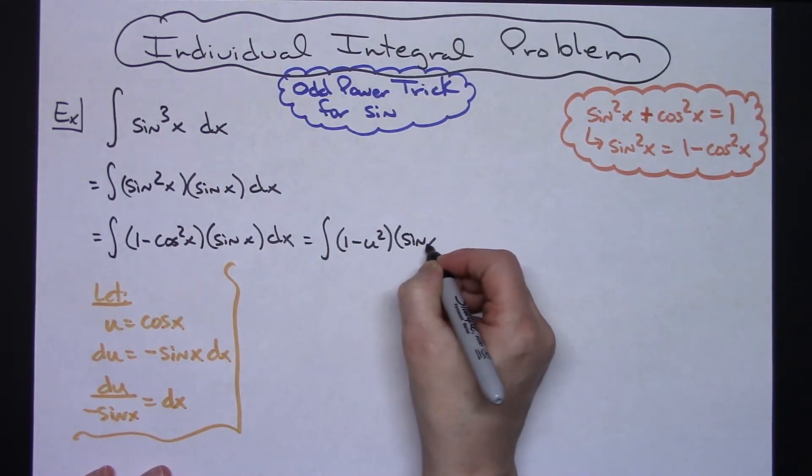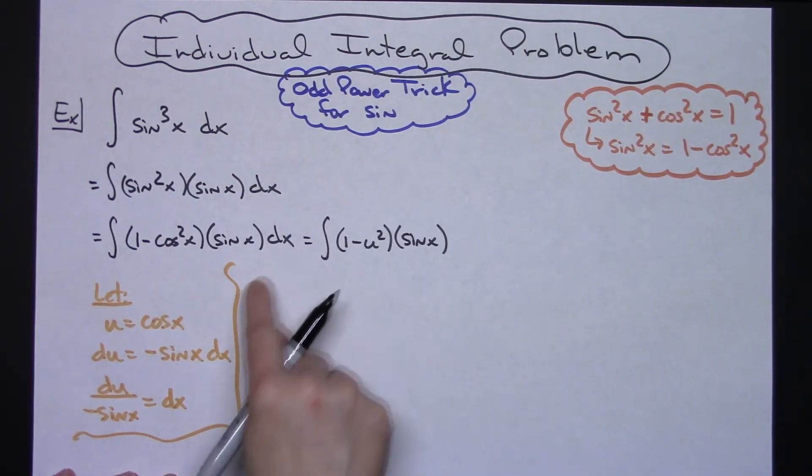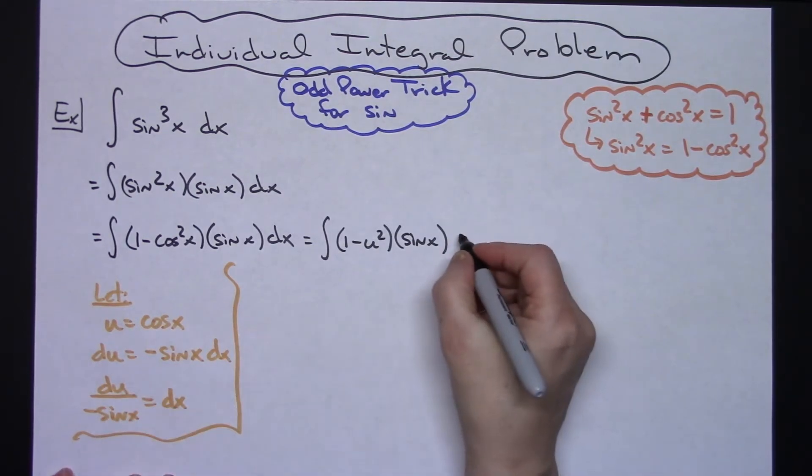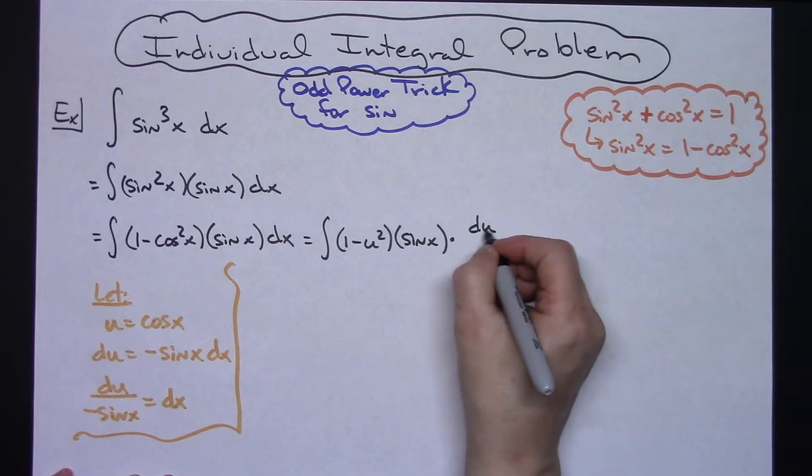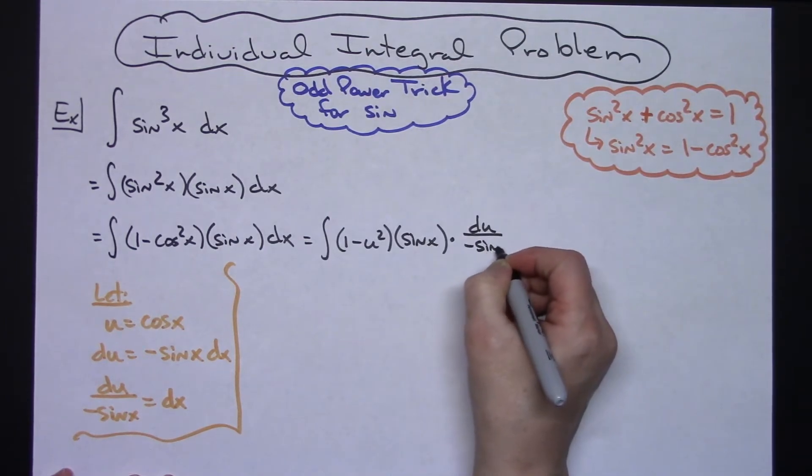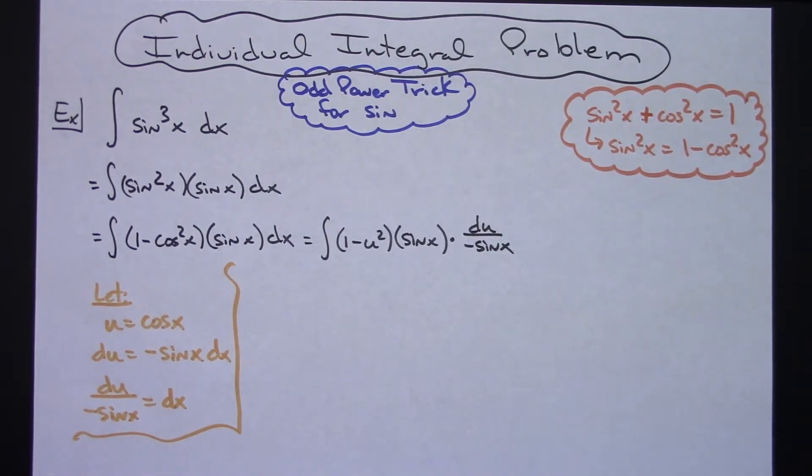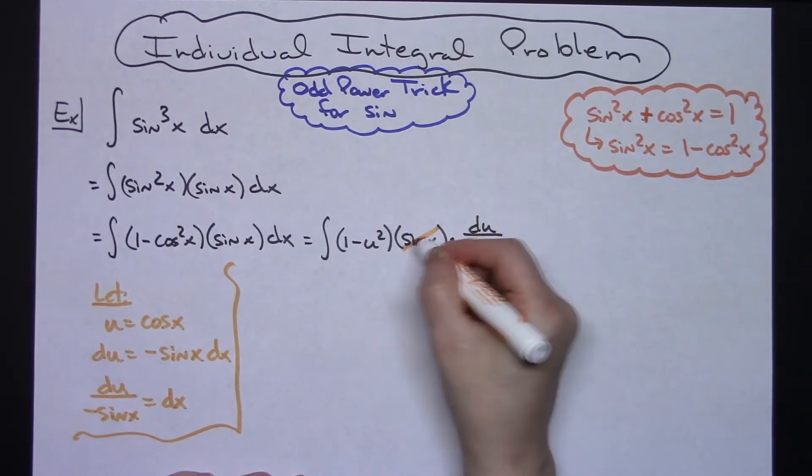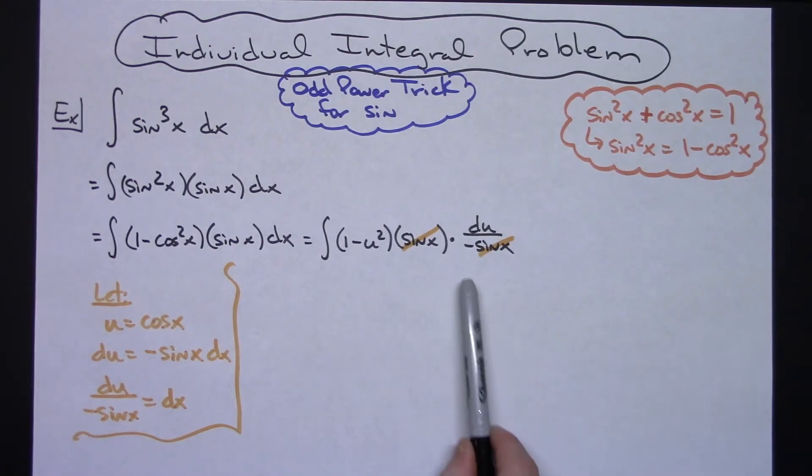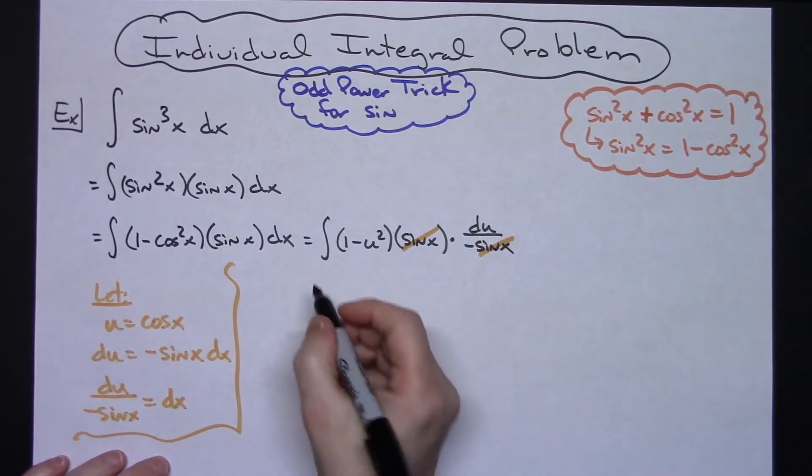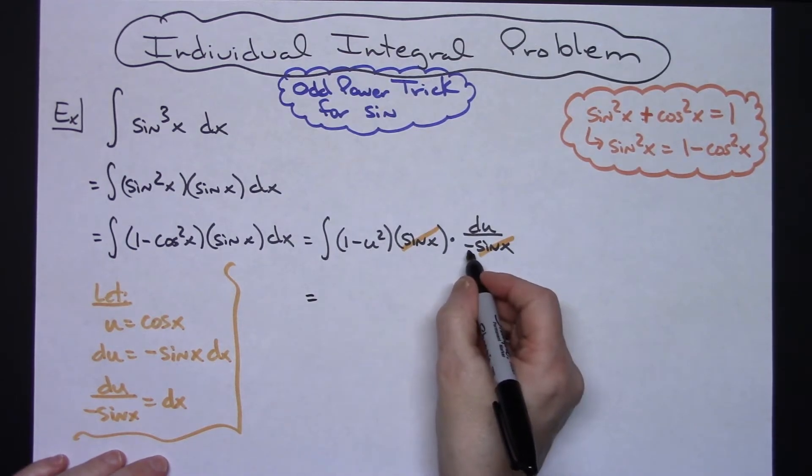Times the sine x, I'm going to replace my dx with the du over the minus sine x. Now that's going to allow those sine x's to cross out, and then I will be able to pull the negative out in front and do a relatively easy integration at that point.